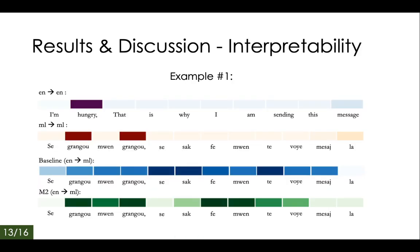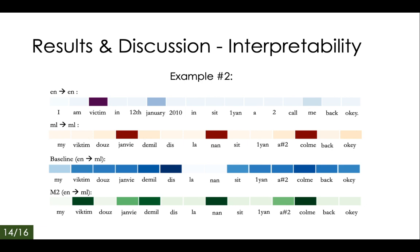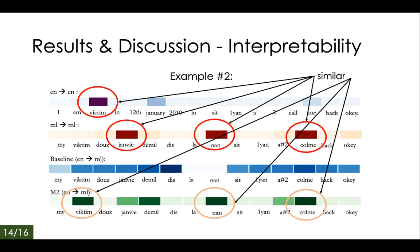Let's do some interpretability analysis. Here is an example of how our model improves the attention layer weights. The first two images show attention weights produced by classifiers trained and tested in the same language — these are the ideal scores. The third image, in blue, shows how the baseline model weighted each word, and the fourth shows how our model weights each word. Note that the third and fourth are cross-lingual setups. Our model aligns more with the first two, while the baseline in blue is more spread out and focused on different words. Model M2 also aligns more closely with the same-language models. This demonstrates the effectiveness of attention realignment for creating a cross-lingual interpretable model, useful for downstream tasks such as multilingual knowledge graph construction where picking parallel words correctly matters.